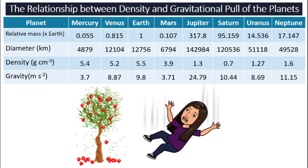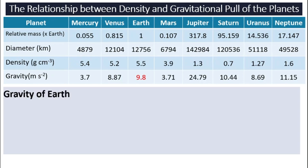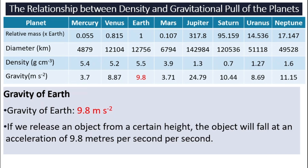Now let's look at gravitational pull. Gravity is the force that pulls all of us back to the center of the Earth — that is why apples fall from trees and we always fall down. Let's look at Earth first. Our gravity is 9.8 meters per second per second. If we release one object from a certain height, it will fall at an acceleration of 9.8 meters per second per second. That is not a typing error — that really is our unit for acceleration.